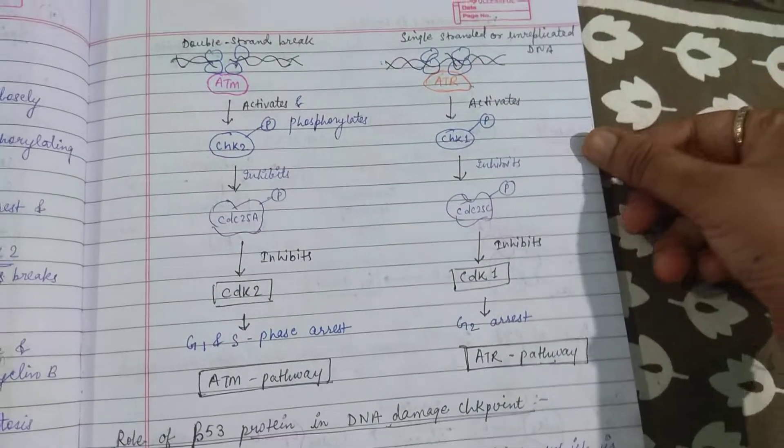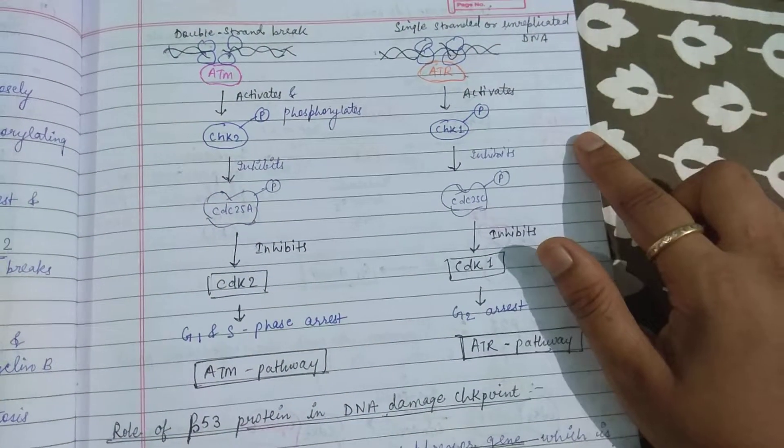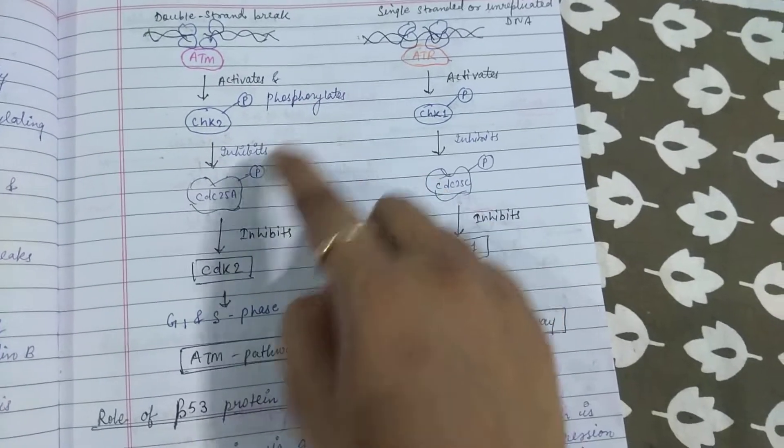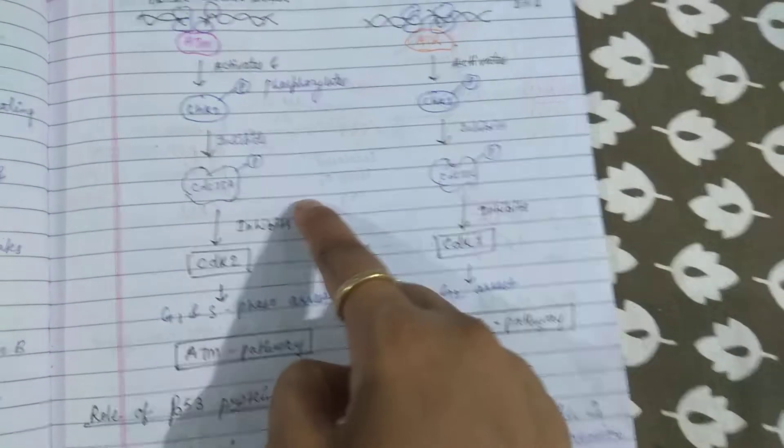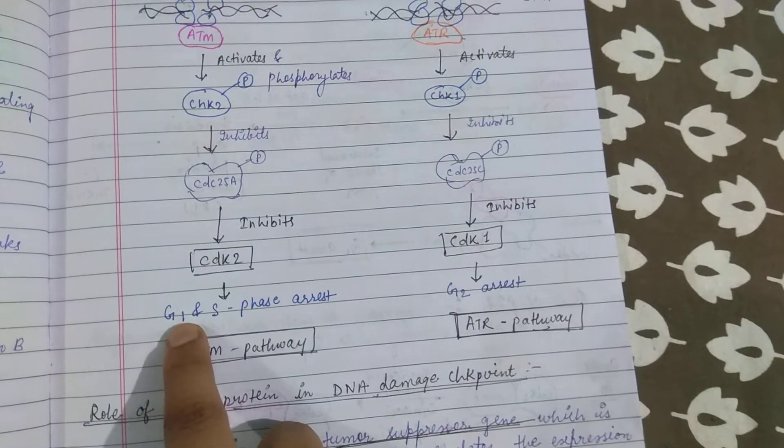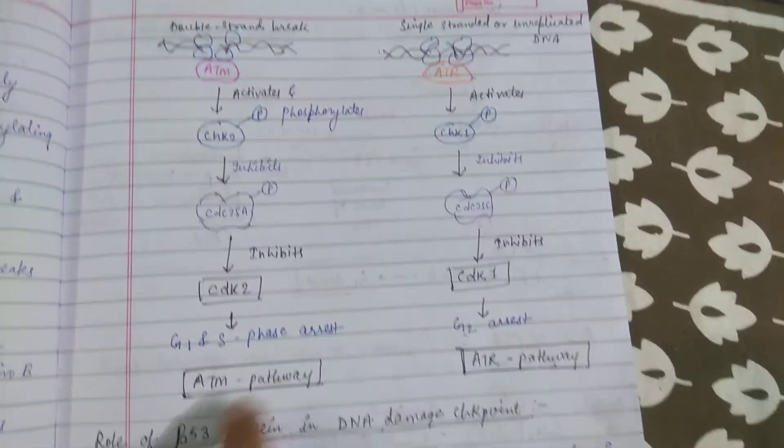We will see what is regulated. Here it is double stranded break and it is single strand break. ATM phosphorylates CHK2, which inhibits CDC25A and CDC25C, causing G1S phase arrest. This is the ATM pathway.